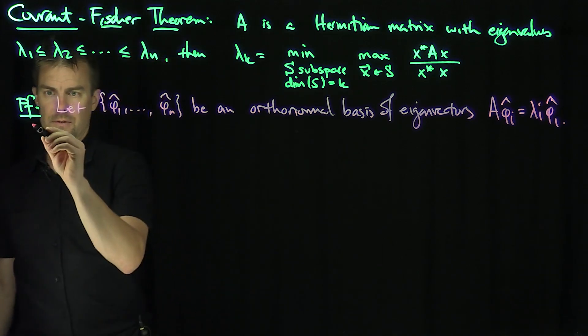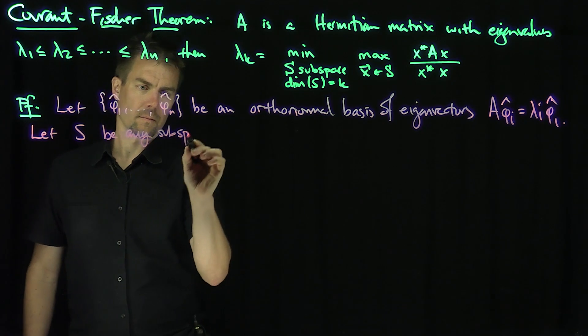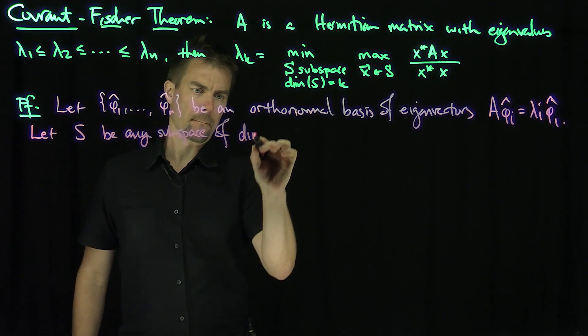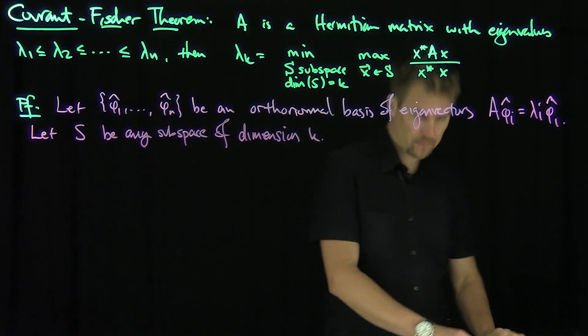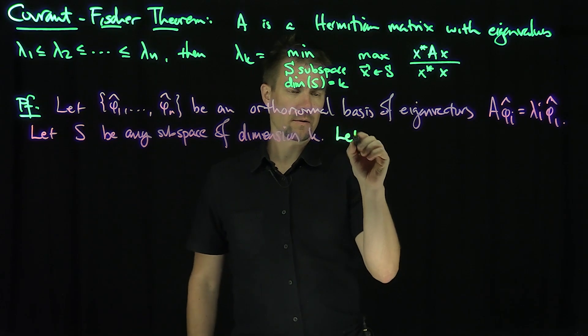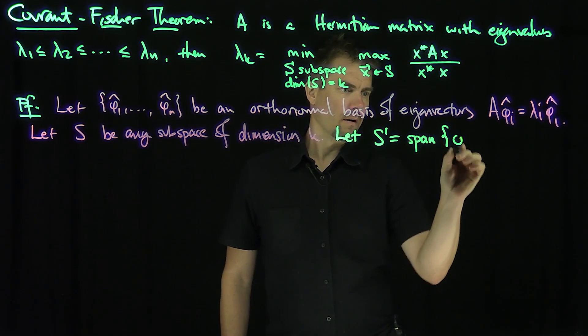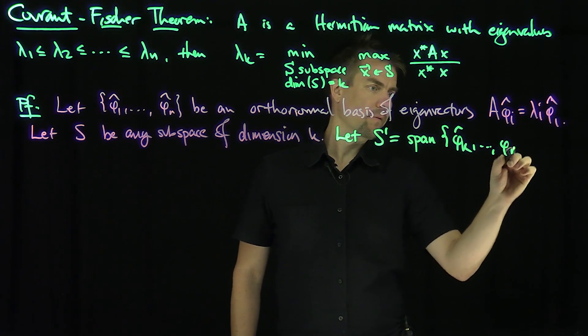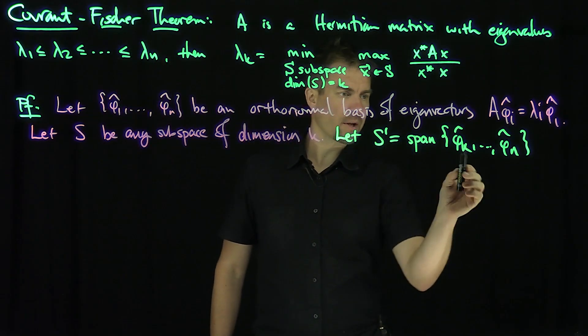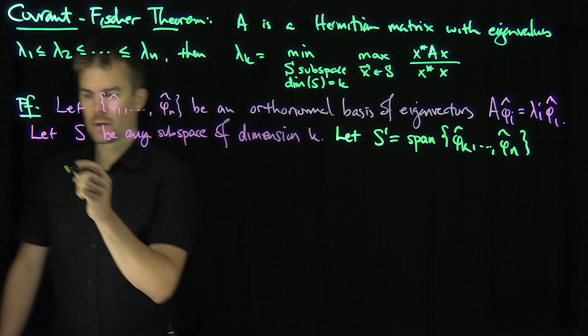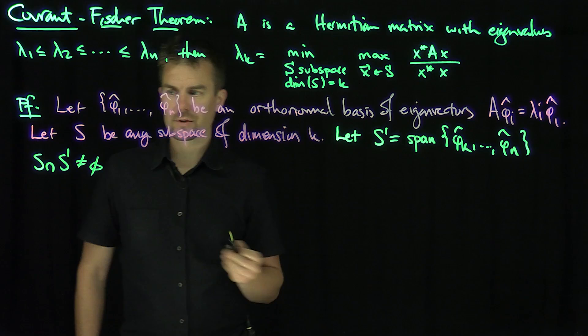Let S be any subspace of dimension k. And now consider, let's let S' be the span of φₖ through φₙ. So now S has dimension k and then S' has dimension n - k + 1. So we know S intersect S' is not empty by dimension arguments